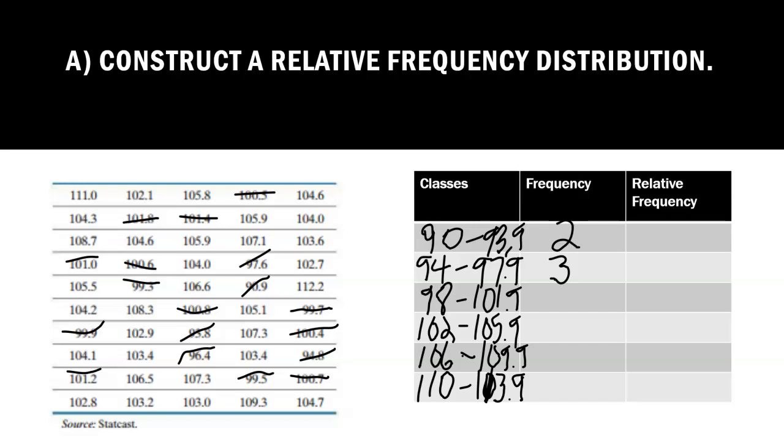Now I need to count the numbers between 102 and 105.9. Let's count those. I see one here, that's 1, 2, 3, 4, 5, 6, 7, 8, 9, 10, 11, 12, 13, 14, 15, 16, 17, 18.